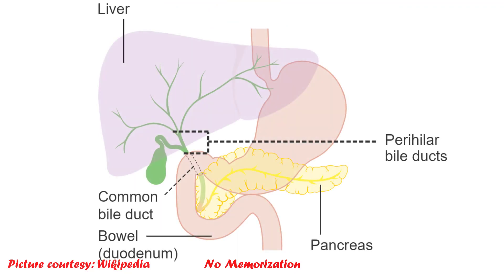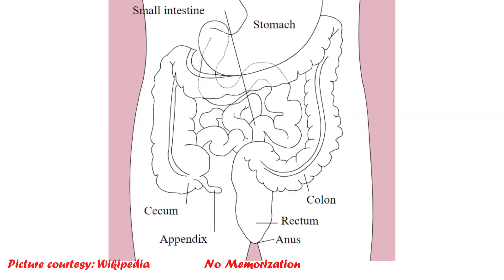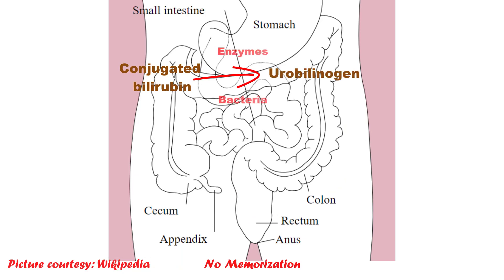Conjugated bilirubin passes through the right and left hepatic ducts, then the common hepatic duct. The cystic duct joins the common hepatic duct, forming the common bile duct, and ultimately passes through the ampulla of Vater into the GI tract. In the GI tract, conjugated bilirubin converts into urobilinogen with the help of different enzymes and bacteria. The majority of this urobilinogen passes through the GI tract and turns into stercobilinogen, which is responsible for the normal color of stool.